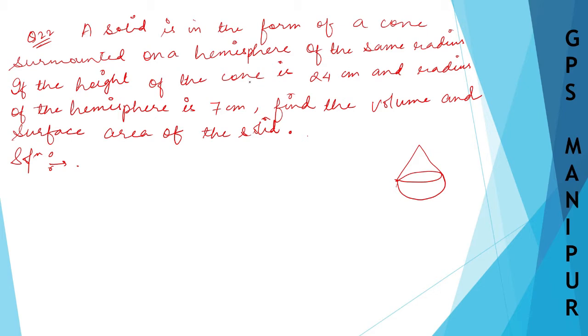Of the same radius, if the height of the cone is 24 centimeters, so height of the cone H is 24 centimeters, and the radius of the hemisphere is 7 centimeters. Find the volume and surface area of the solid.